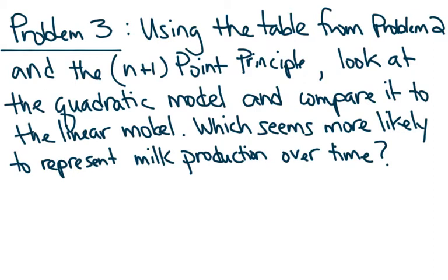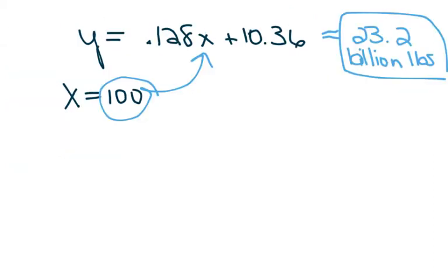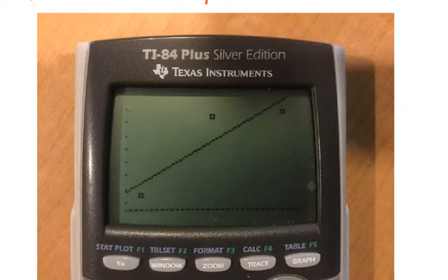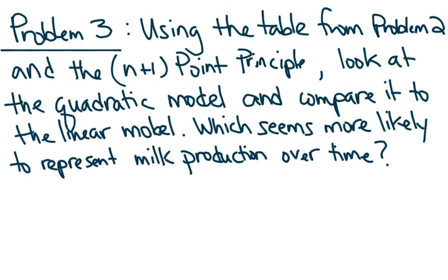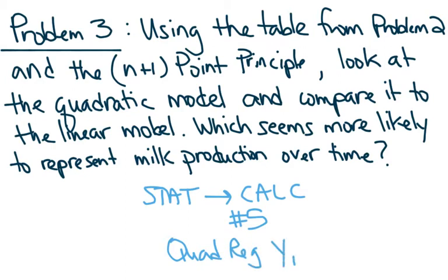Well, let's actually find the quadratic model and compare it to the linear model and see which one is more likely to represent milk production over time. So we just looked at the linear model. I should go back into the page. Here's where the linear model was. Now let's go and do the quadratic model. We already have the data in our calculator. So now we're going to go to our stat calc number 5. Remember, if you have the old operating system, when quadreg shows up on the screen, you need to go put Y1 next to it. If you have the new operating system, Y1 goes next to store, R-E-G-E-Q, the store regression equation.